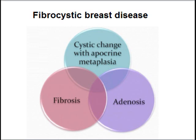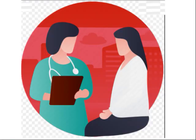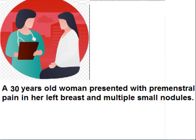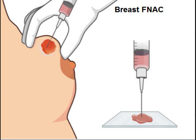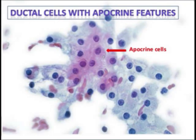Usually patients are young, between 20 to 40 years of age. A 30-year-old woman presented with pre-menstrual pain in her left breast and noted multiple small nodules. On breast examination, the doctor found an ill-defined mass in the outer quadrant of the left breast, and she was advised for fine needle aspiration cytology.